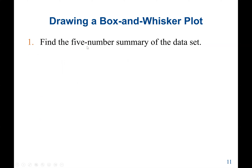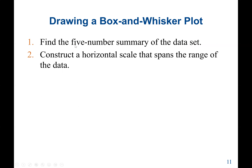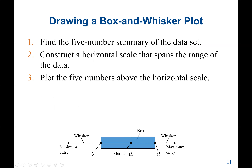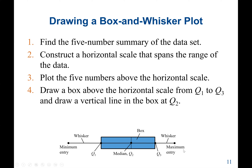A question is given to us: find the five-number summary of the data set, then construct the box and whisker plot. We have Q1, Q2, and Q3 calculated from our previous example, along with the minimum and maximum values. We draw a box above the horizontal scale from Q1 to Q3, then draw a vertical line inside the box at Q2. So Q1 is the start of the box, Q3 is the end of the box, and the vertical line inside the box is Q2.